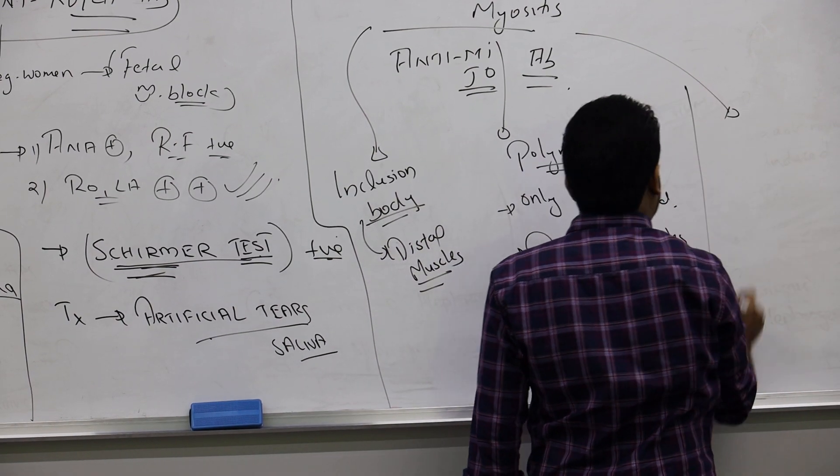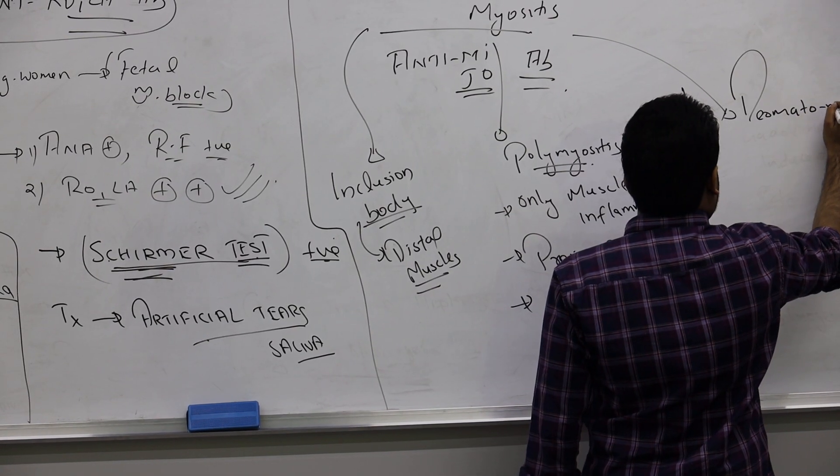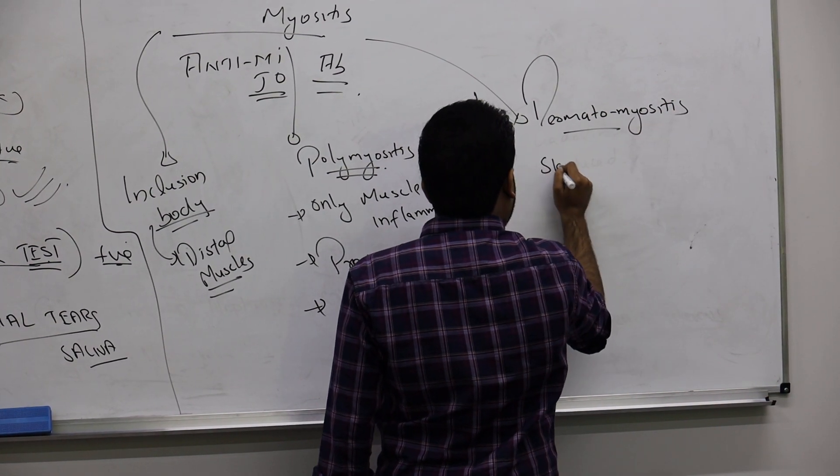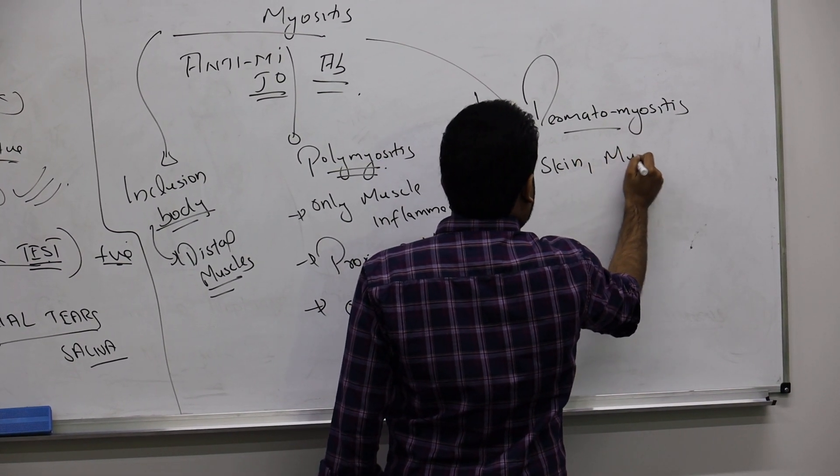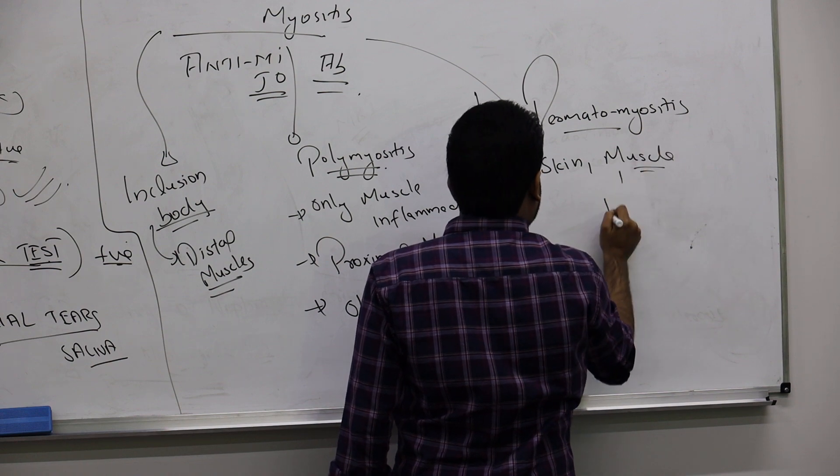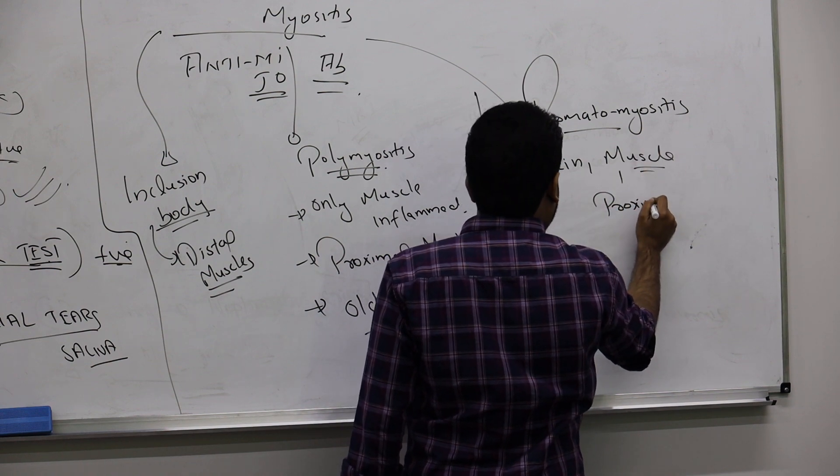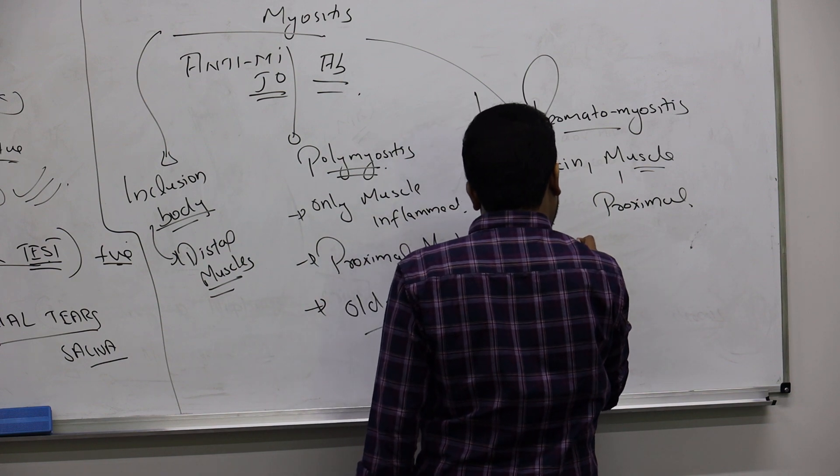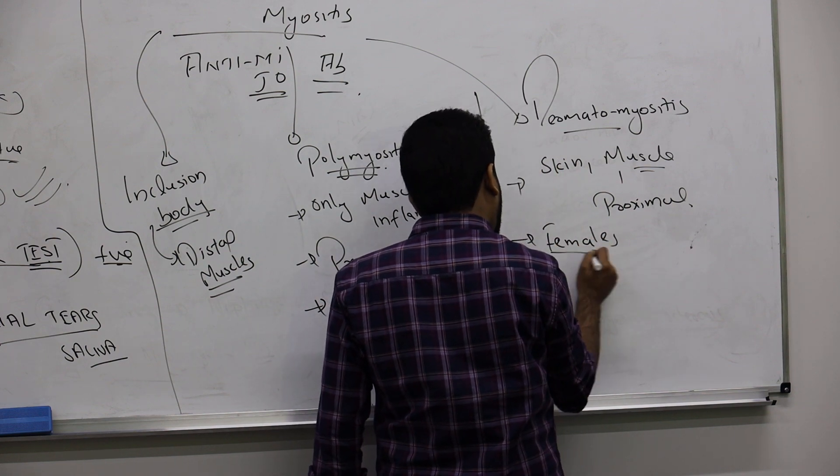The most important one here is dermatomyositis. You can see here skin is inflamed as well as muscle is inflamed. Here also proximal muscle will be inflamed. It is mainly seen in females. You can see both females and males, but females is predominantly affected.